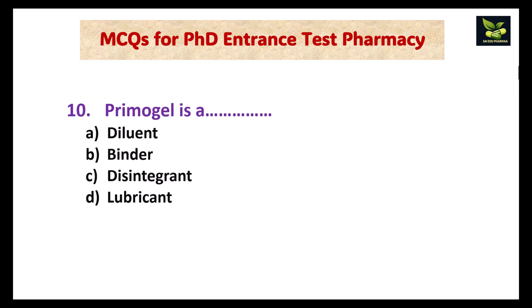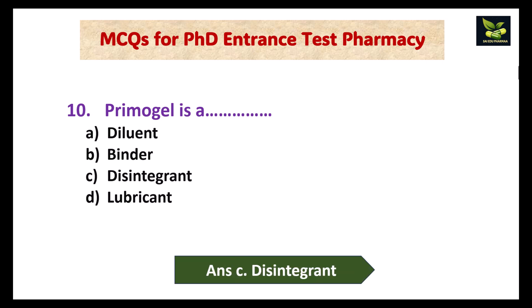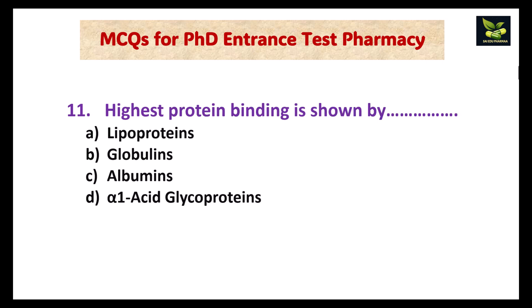Primogel is a type of additive — which additive is it? The answer is disintegrant.